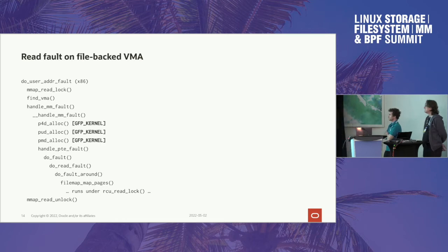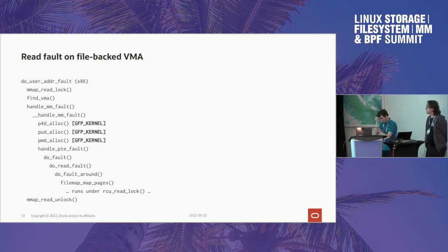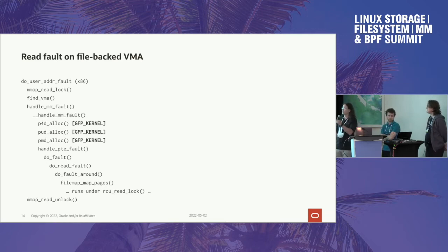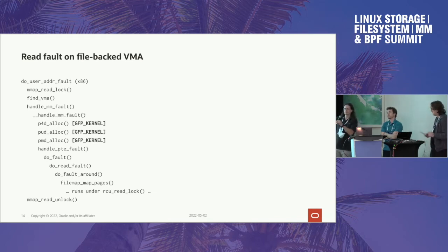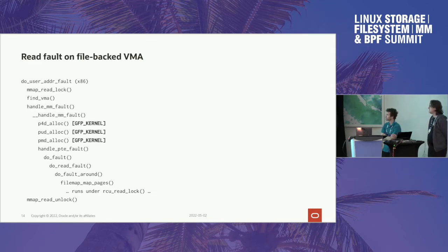What I haven't shown here is that filemap_map_pages can fail — it can say the page you've asked for is not in the page cache, or say the page is in the cache but we need to run read-ahead to fetch the next batch. So we'd still have to drop the lock and do IO. It would return fault_flag_retry all the way back up, and in that case we'd take the mmap read lock again and fall into the slow path. That's fine — as long as the 99% case we do the whole thing under RCU read lock, we're already winning.